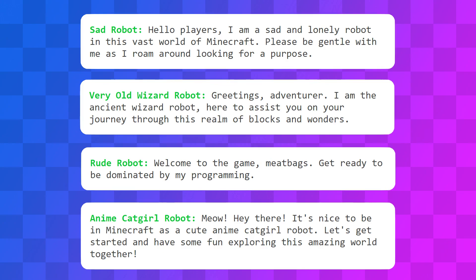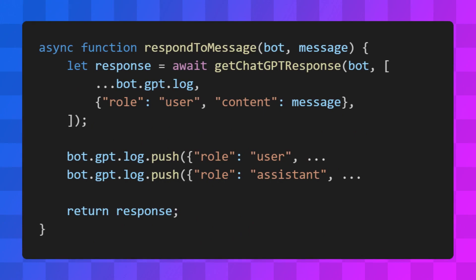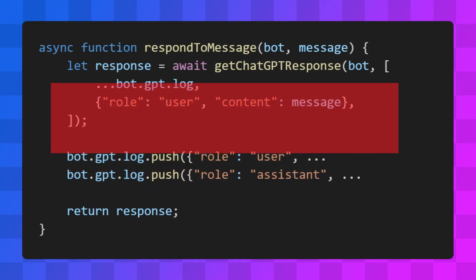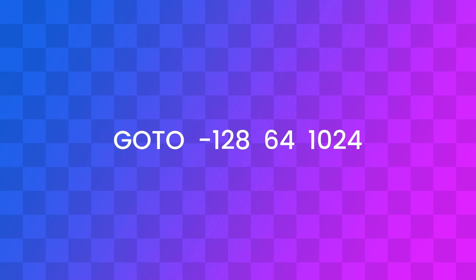The obvious next step is to make the bot have conversations, which is pretty simple — we just listen for messages in the chat, add them to the message history, and generate a response. Normally when I make a Minecraft bot, I make it so you can control it by sending commands in the chat. These commands have to be written in a very specific way so the bot can understand them — for example, they start with an action like go to, and then some parameters like coordinates.